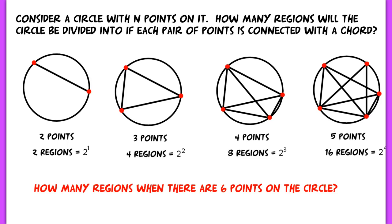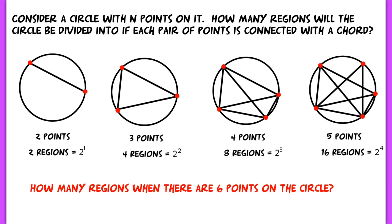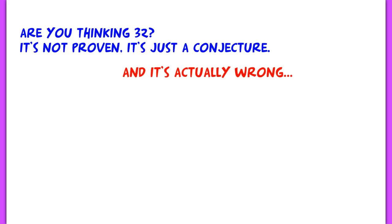A fifth point gives 16 regions. Now, how many regions would there be if there were six points on the circle? Perhaps because you're seeing a pattern, you're thinking there might be 32 regions. But this is just a conjecture, and in fact this conjecture is actually wrong. There are actually only 31 regions. If you were to actually draw this out, you'd see only 31 regions.